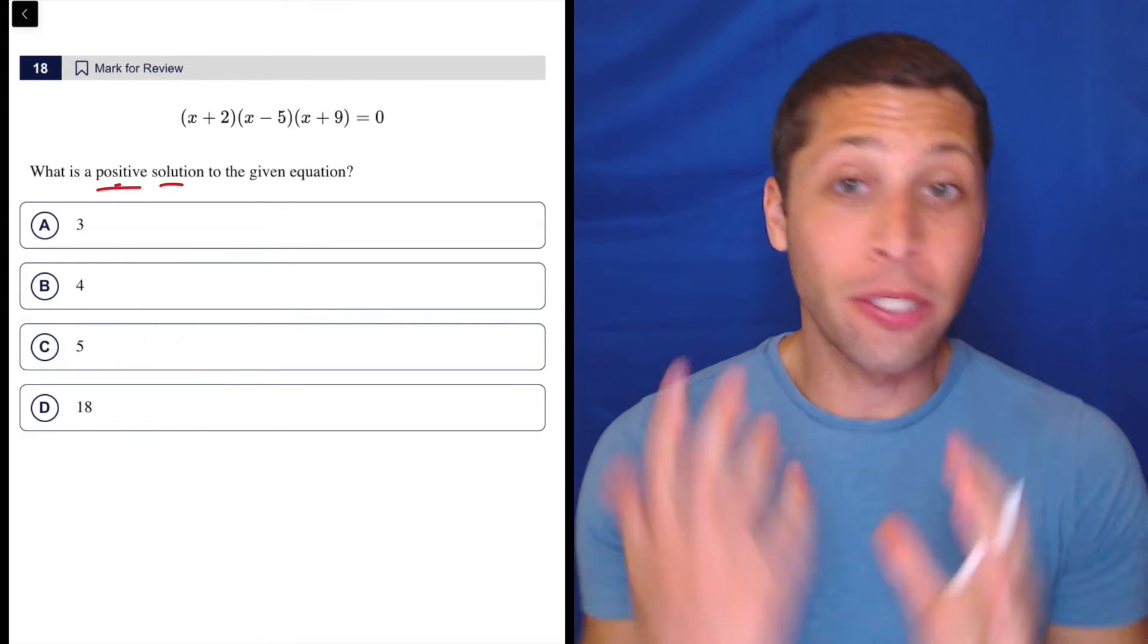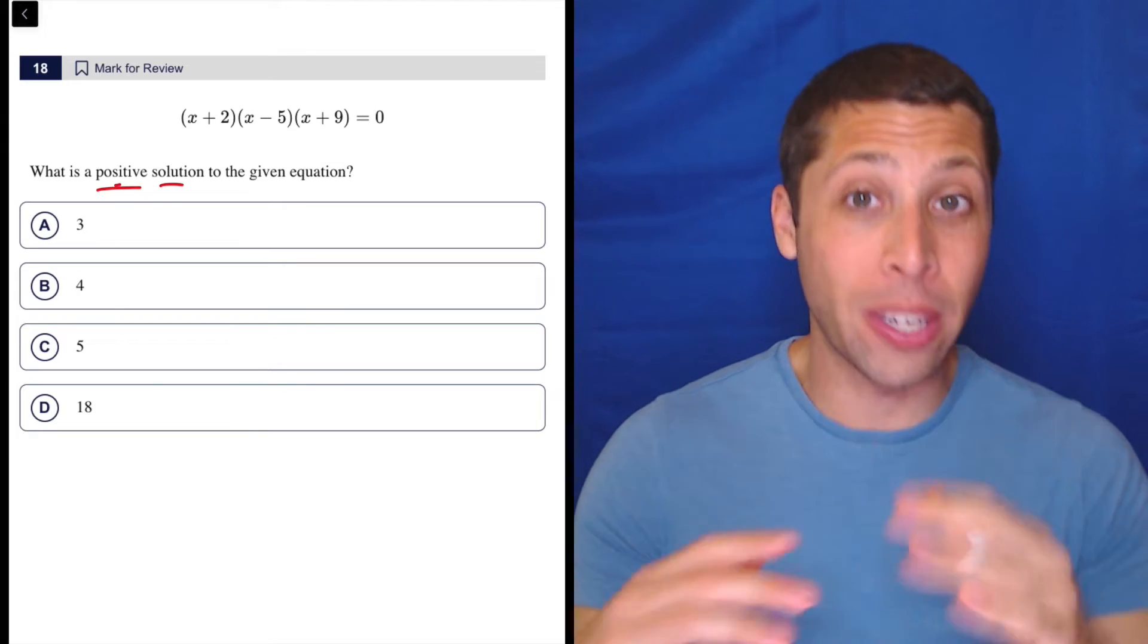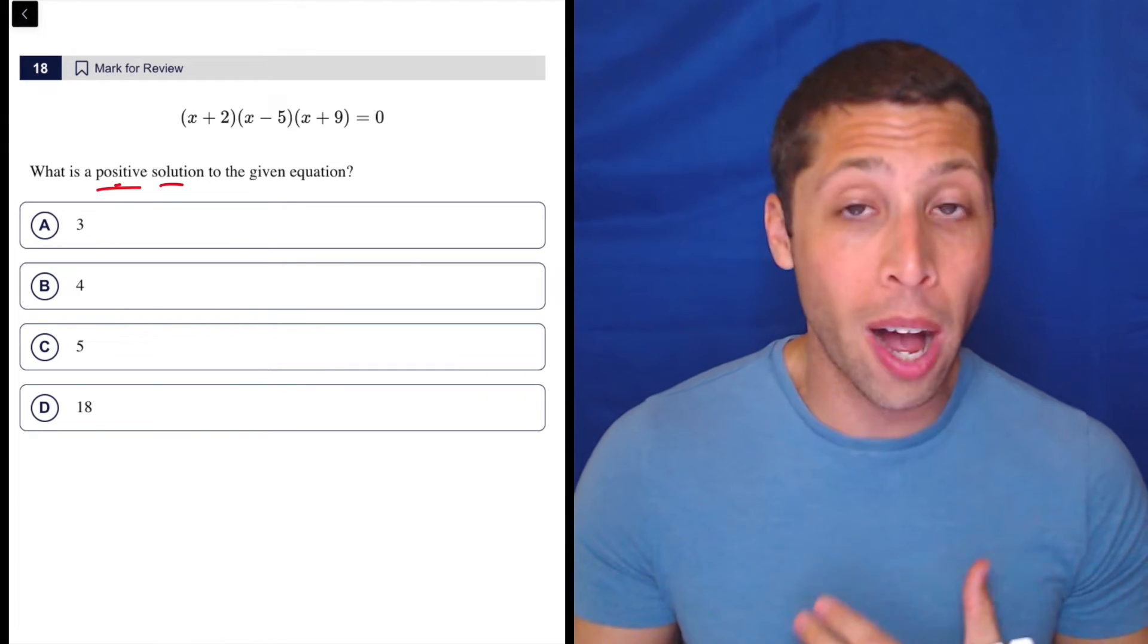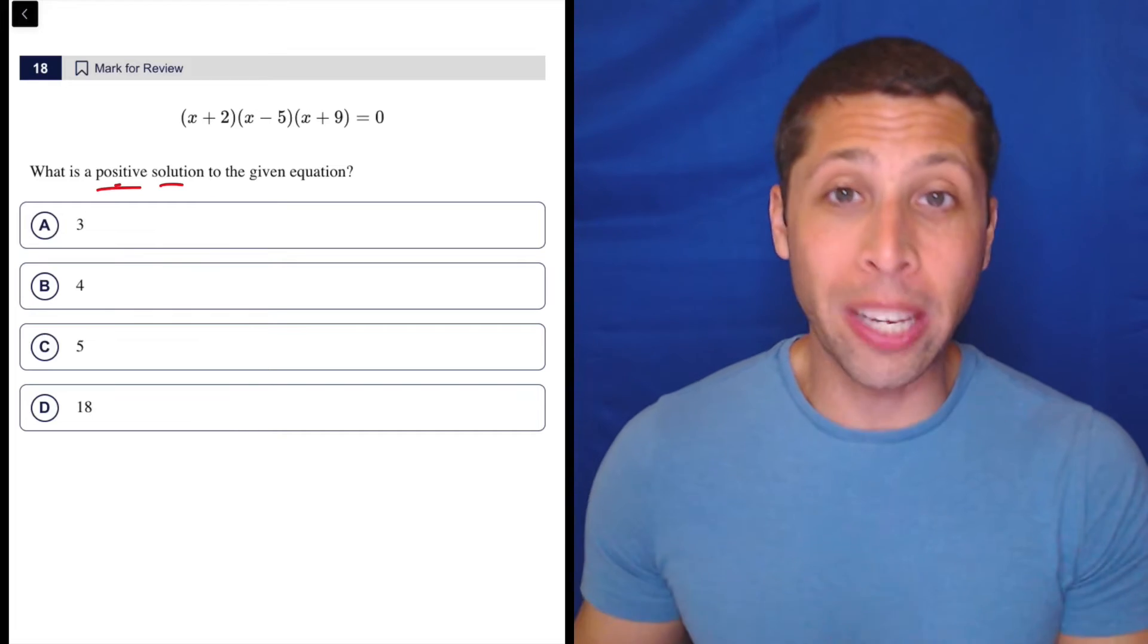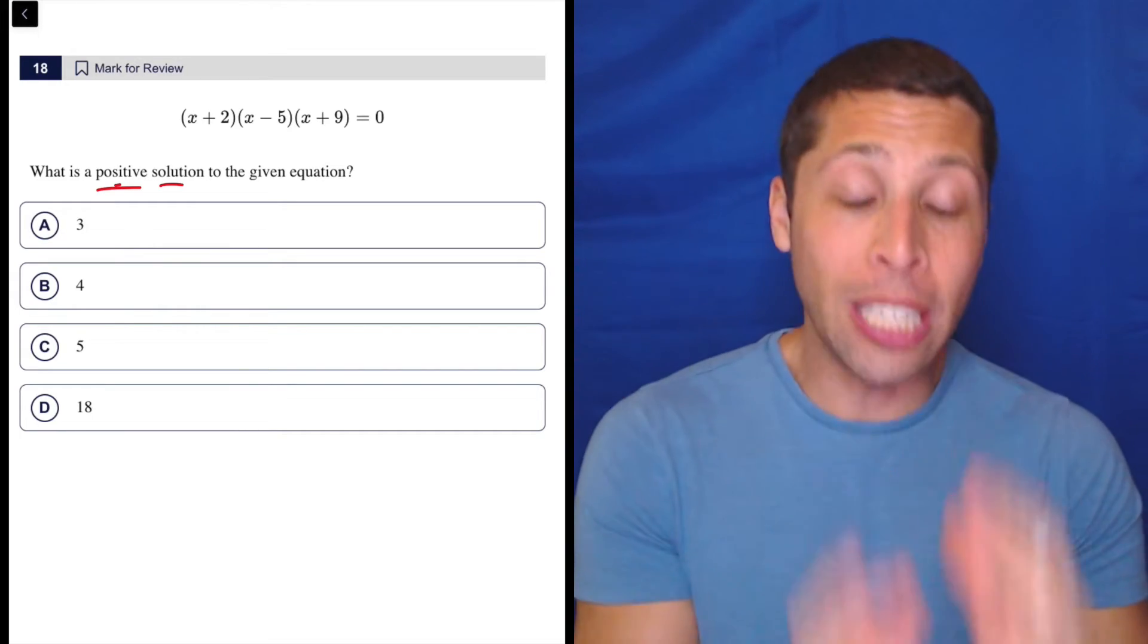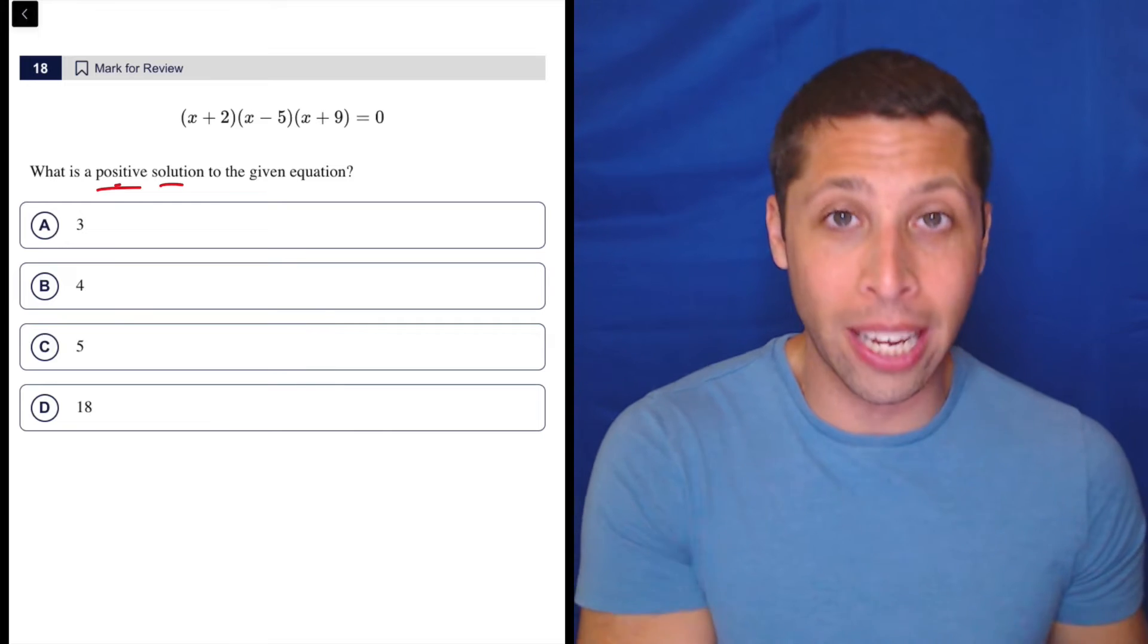When we have these factors, the solutions are basically the x-intercepts if we didn't have an equal to zero and just had it equal to y, but more specifically the whole reason we had it equal to zero is so that we can treat each of these factors individually and say...